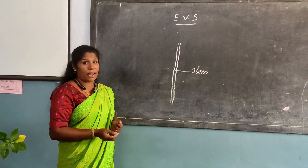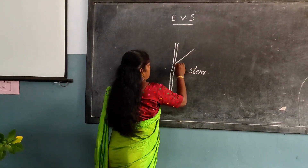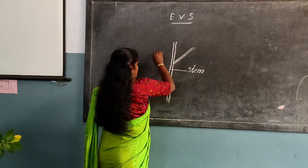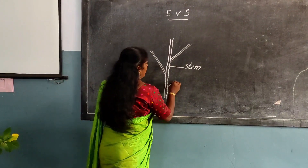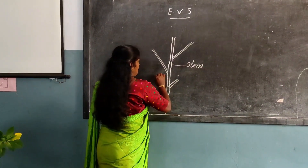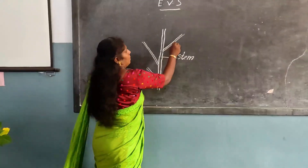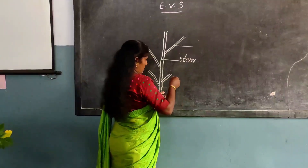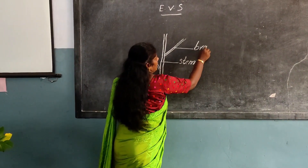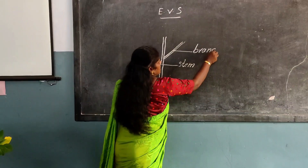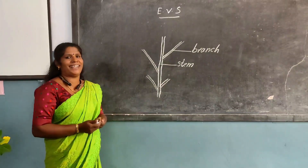And the next part is branch. Branch. Branch. Many branches are here. B-R-A-N-C-H. Branch. Branch. This is a branch and this is part of the plant.